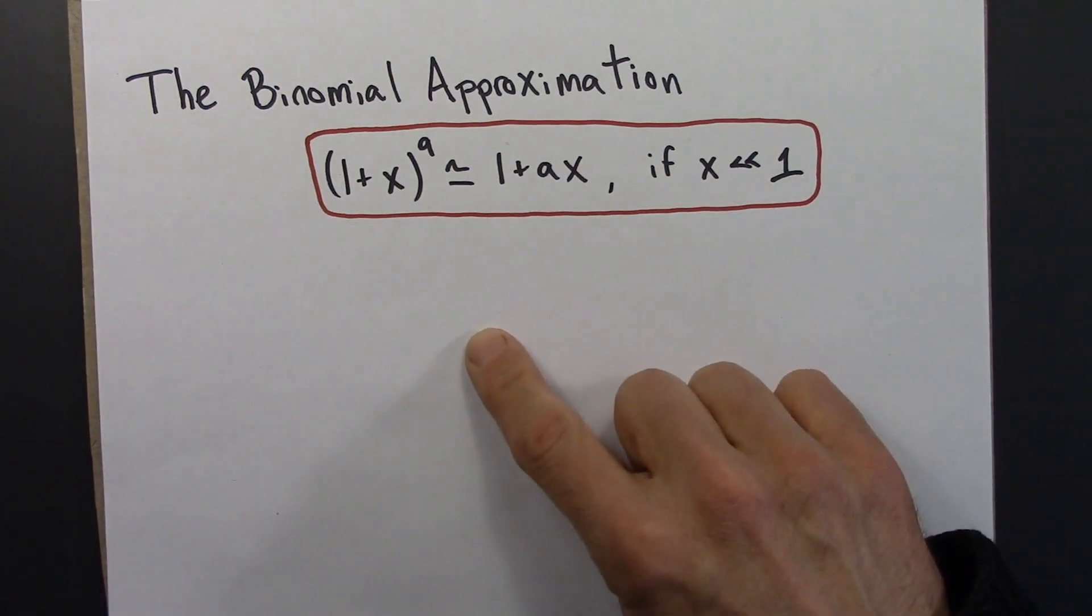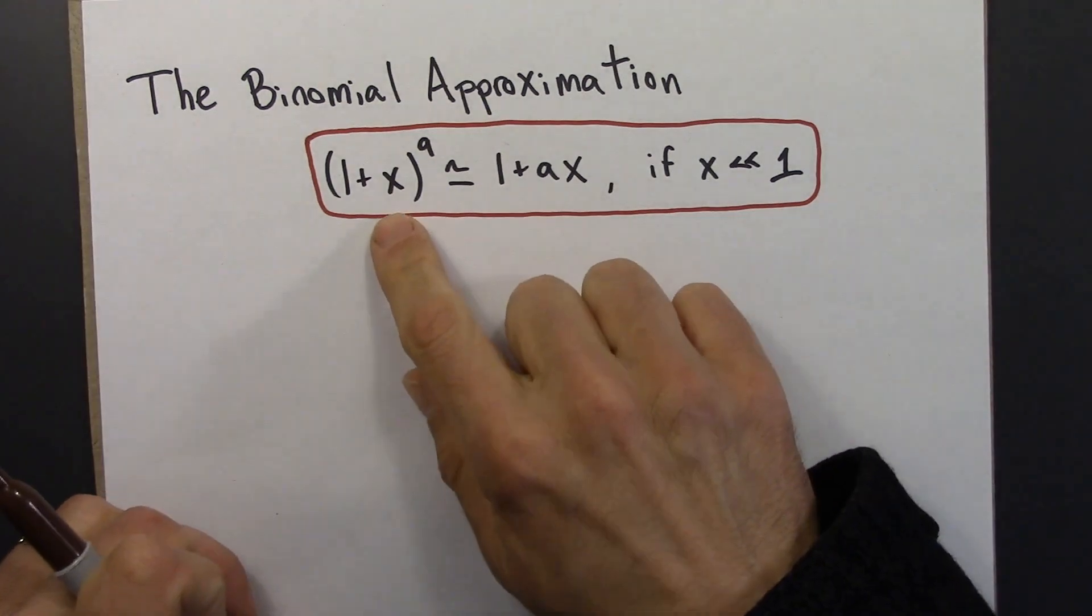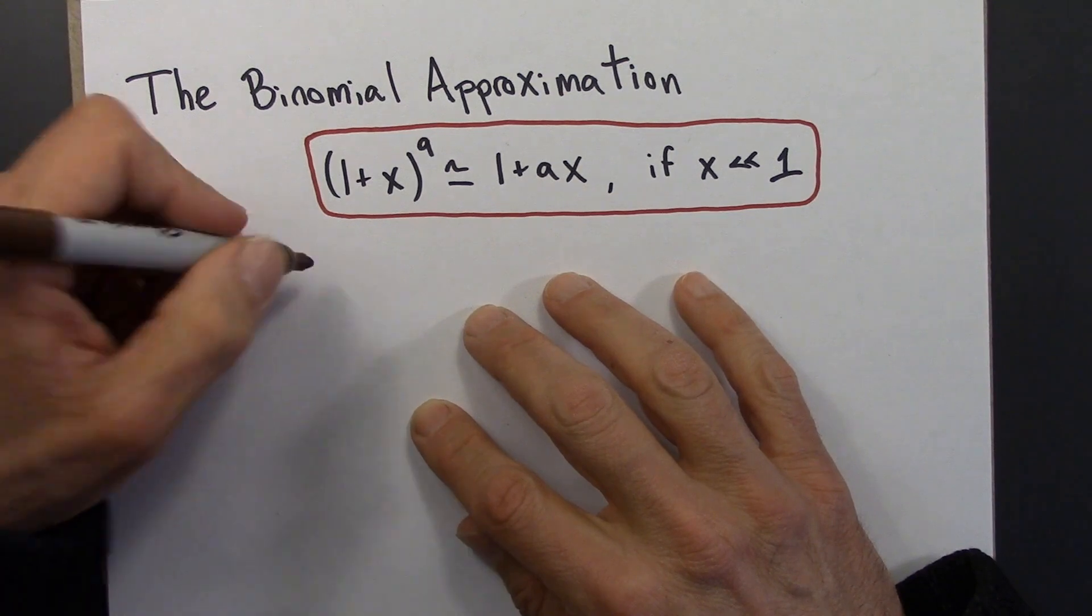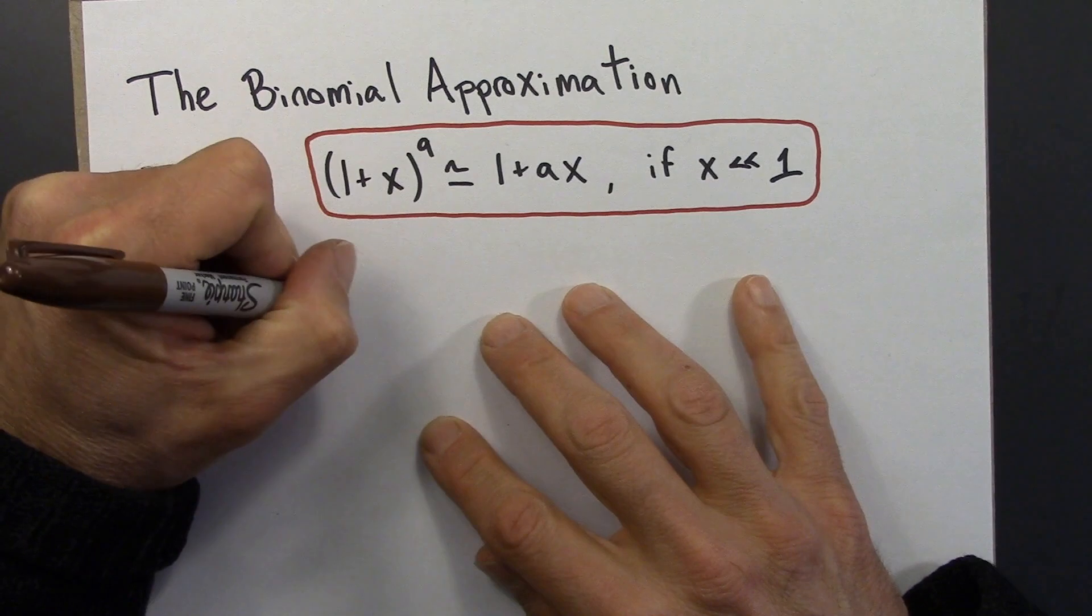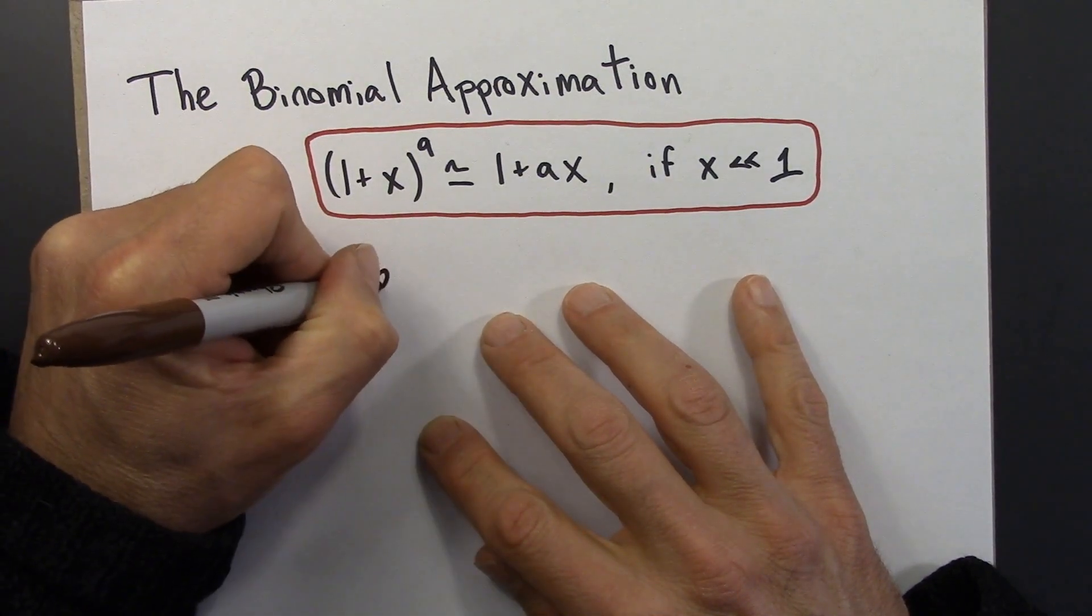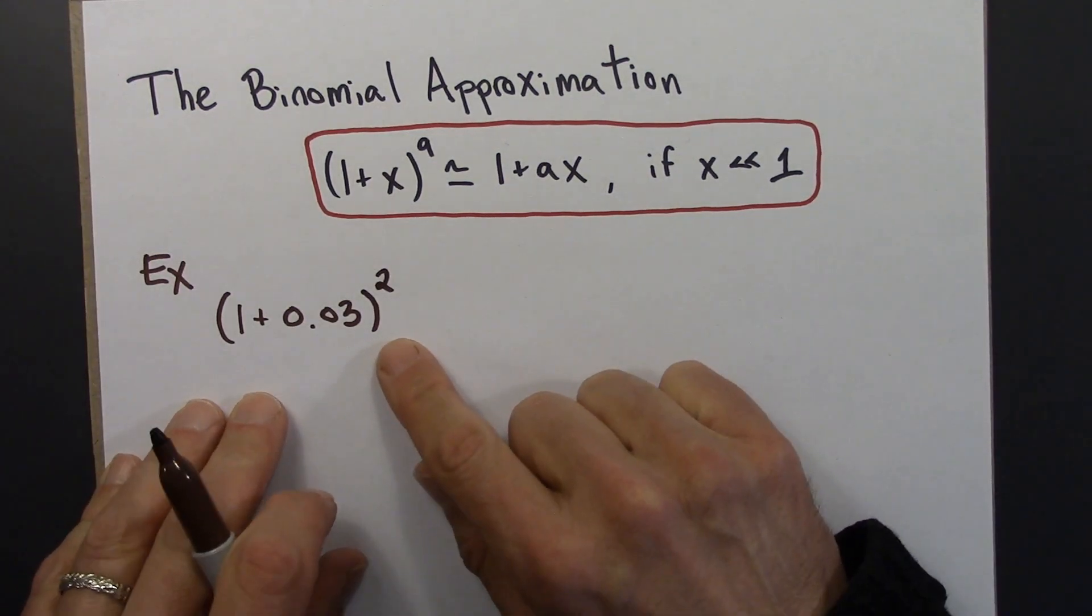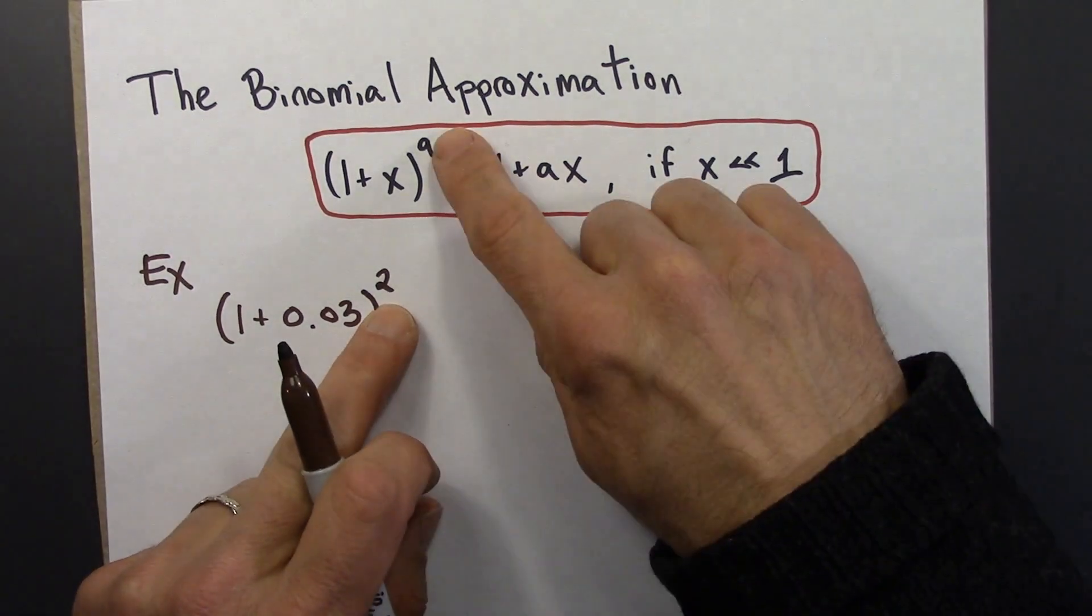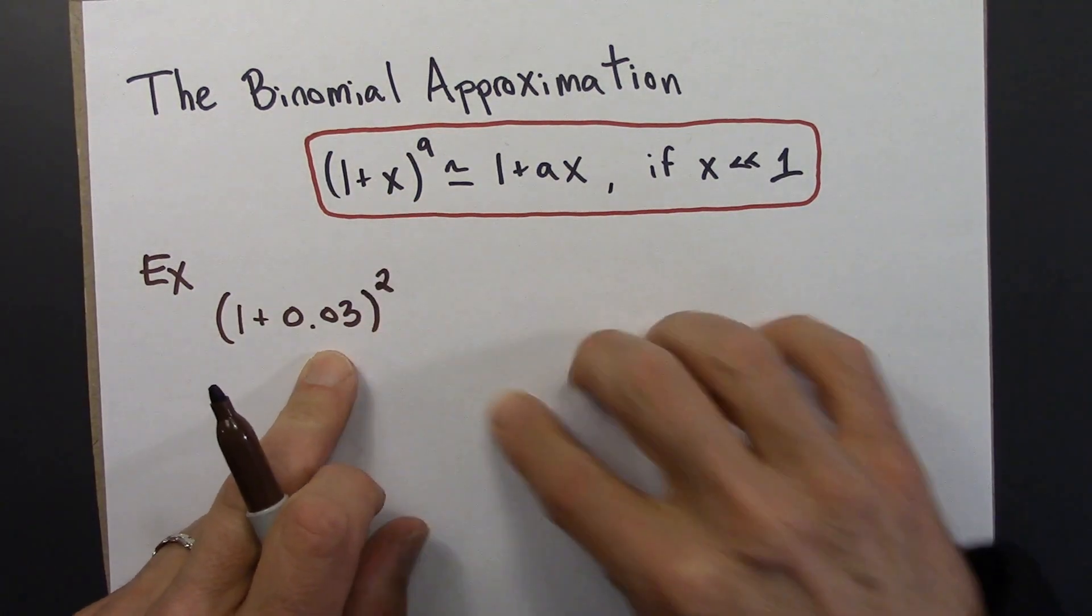Let me illustrate this with a quick example. So let's say we happen to have (1 + 0.03)². Alright, so let's do this two ways. First, let's use the binomial approximation. So we identify a as 2, and then playing the role of x is 0.03.